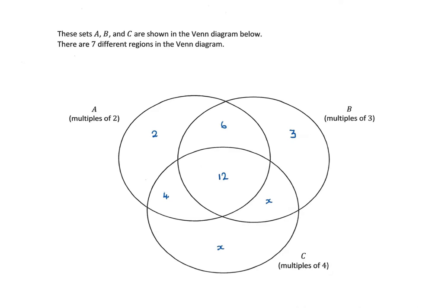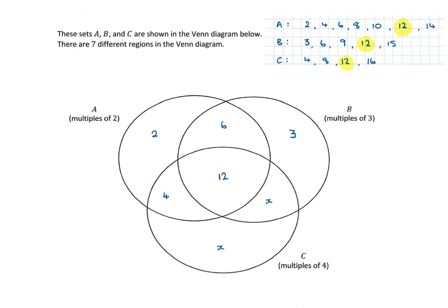For the next part, we're asked to fill in the Venn diagram. It's always easiest to fill in the middle part first. The number 12 is in all three sets, so it goes in the very centre — that's in the overlap of A, B, and C. The next thing to look for is which numbers are common to just A and B. Looking at multiples of two and three, the number common to both A and B is 6, so that goes in the A and B overlap.